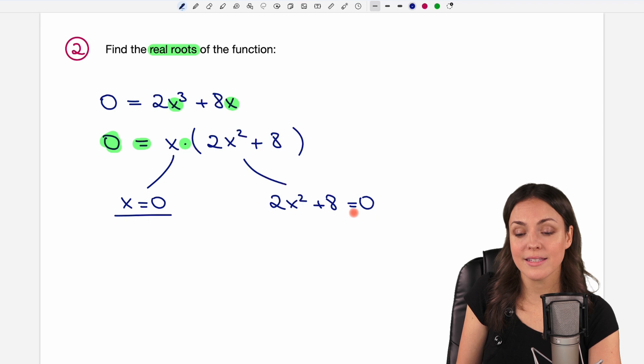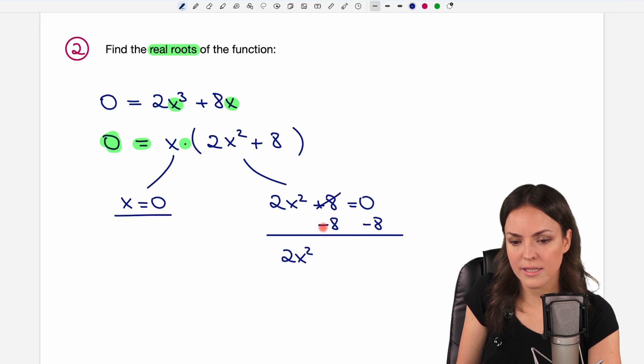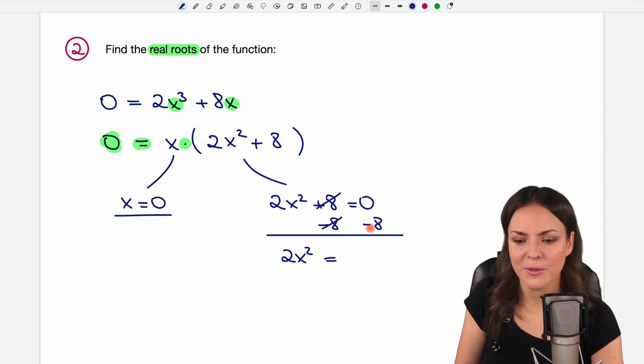Let's solve this for x as well. We can bring the eight to the other side by subtracting eight on both sides. So we have the 2x squared on the left side, because this cancels out. And on the right side, we have zero minus eight equals negative eight. Now if we want to solve for x, we would have to get rid of the two here. So we divide both sides by two. This cancels out then, and x squared is left. And on the other side, negative eight divided by two equals negative four.